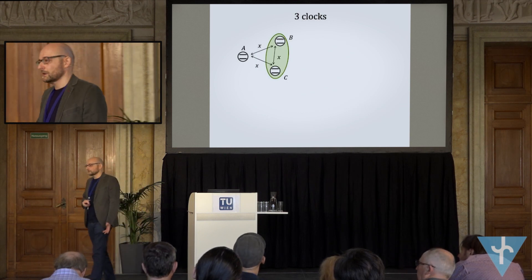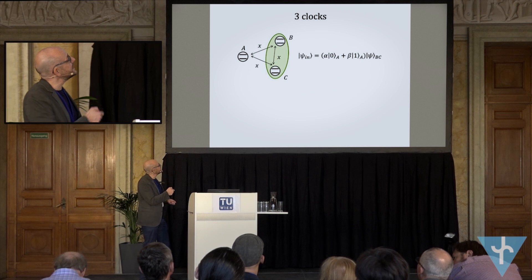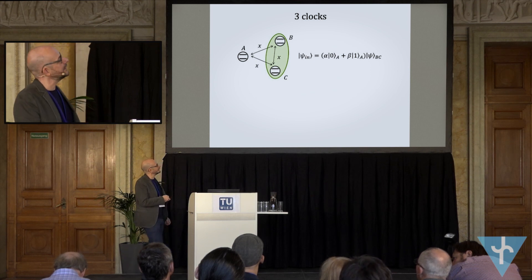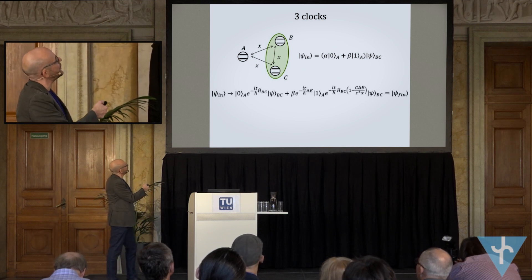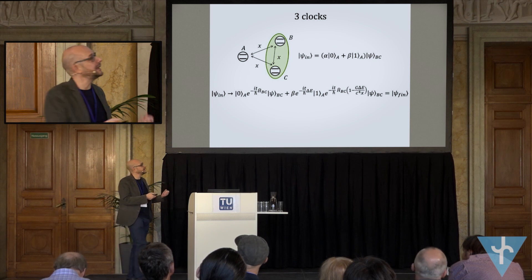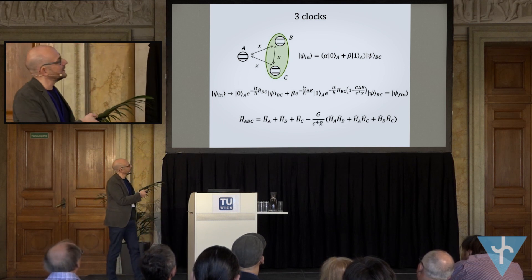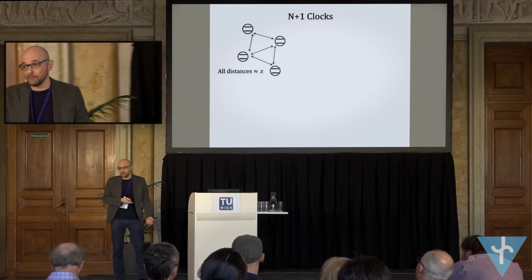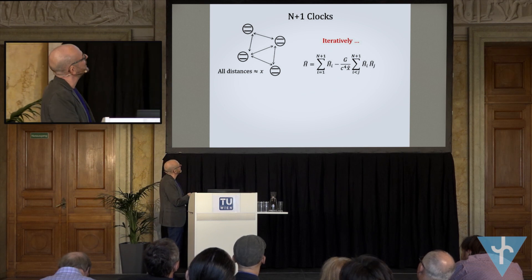What about three clocks? The same scenario: sit on one clock, look at the two extreme cases, and observe how the other two clocks evolve — you already know the Hamiltonian for two clocks. If you are at ground state, evolve without time dilation; if at energy one, apply time dilation. The result is a pairwise Newtonian potential between each pair of clocks. For N+1 clocks, iteratively you get the pairwise interaction between any pair of clocks.